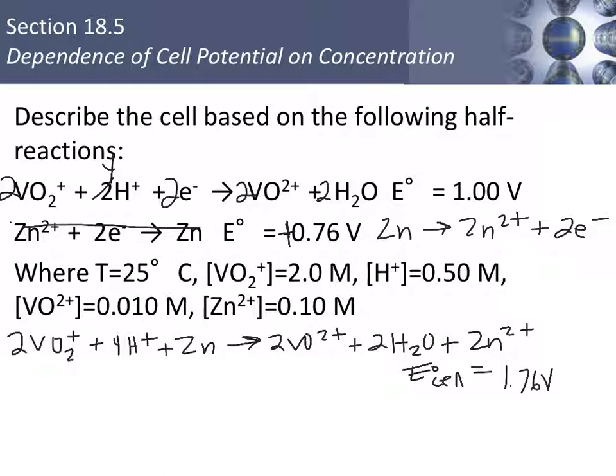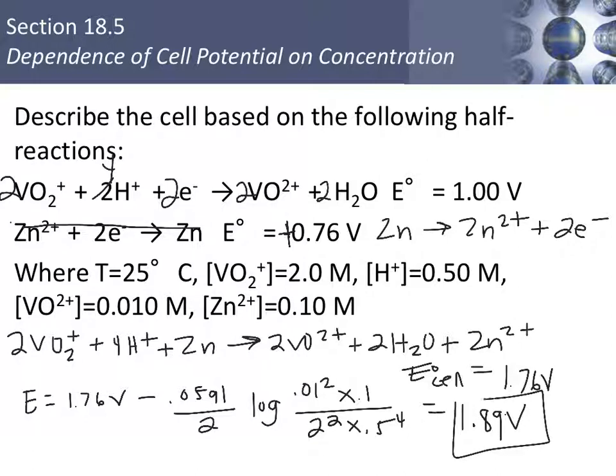Now we're not at 1 molar for our concentrations, so we're going to use the Nernst equation to solve for the cell potential. E equals 1.76 volts minus 0.0591 over 2 for 2 moles of electrons, and then we're going to take the log of the concentrations. We'll just plug them in, products over reactants: 0.01 squared times 0.1 over 2 squared times 0.5 to the fourth. We are not including any solids like zinc or any liquids like water in Q. And our answer is 1.89 volts. This is an increase in voltage over the 1.76 volts. We increase the concentration of a reactant and decrease the concentration of the products compared to 1 molar. So this is an increase in the driving force of the electrons.